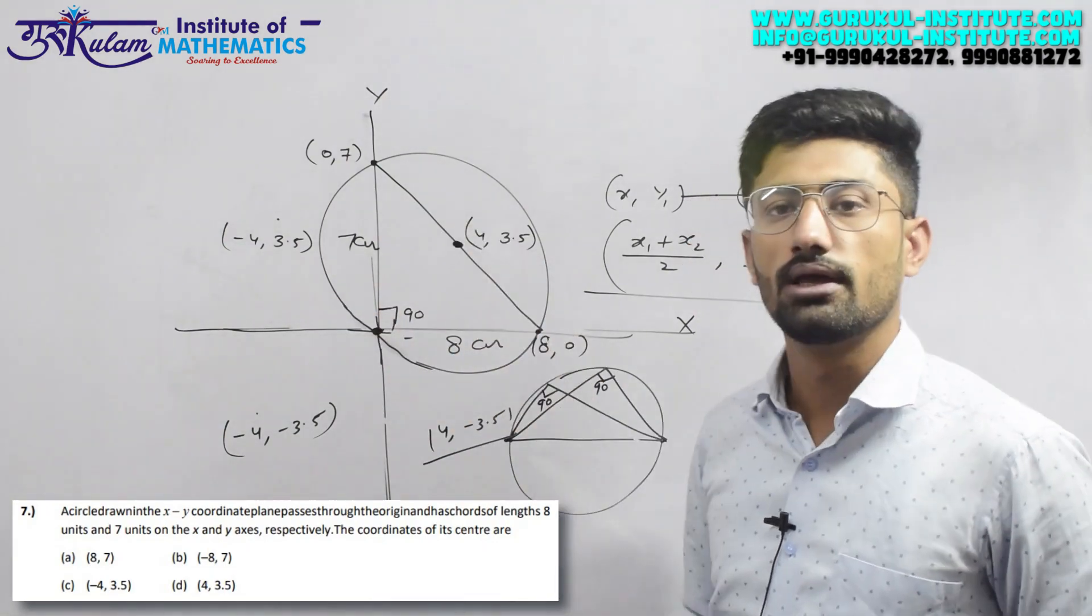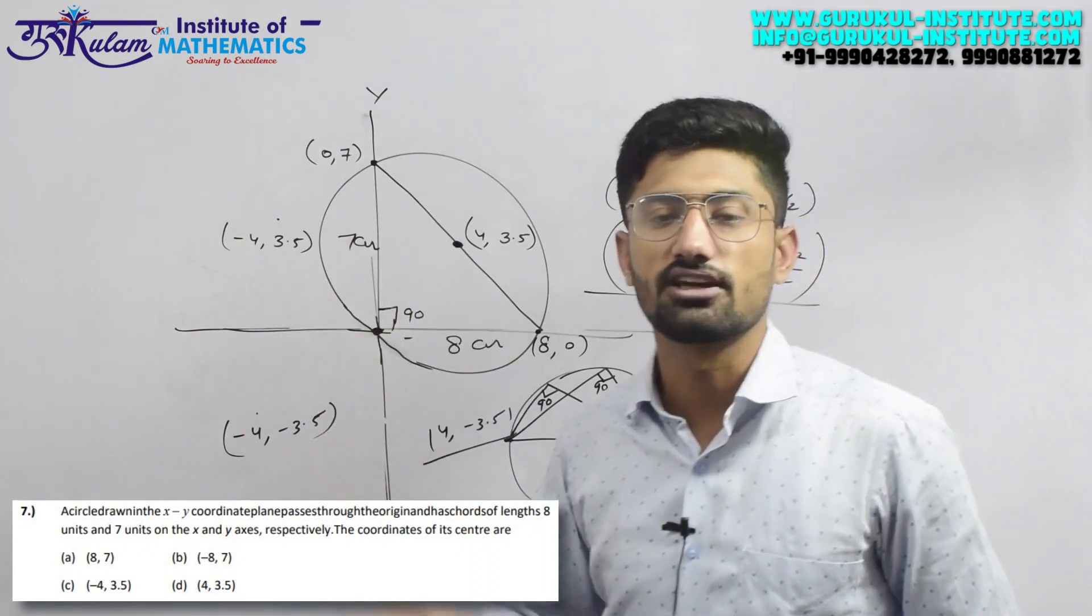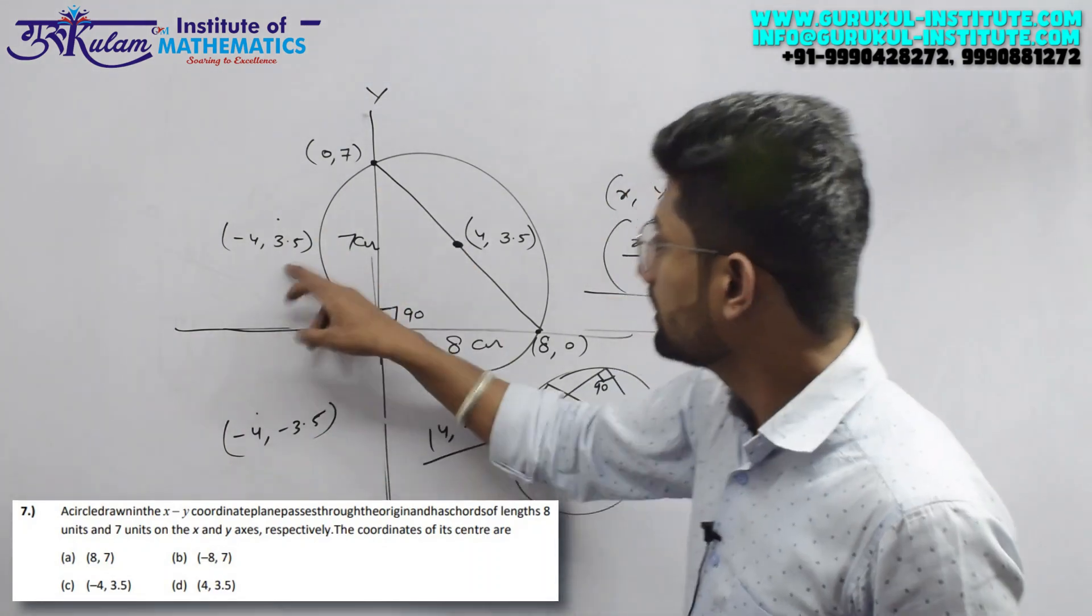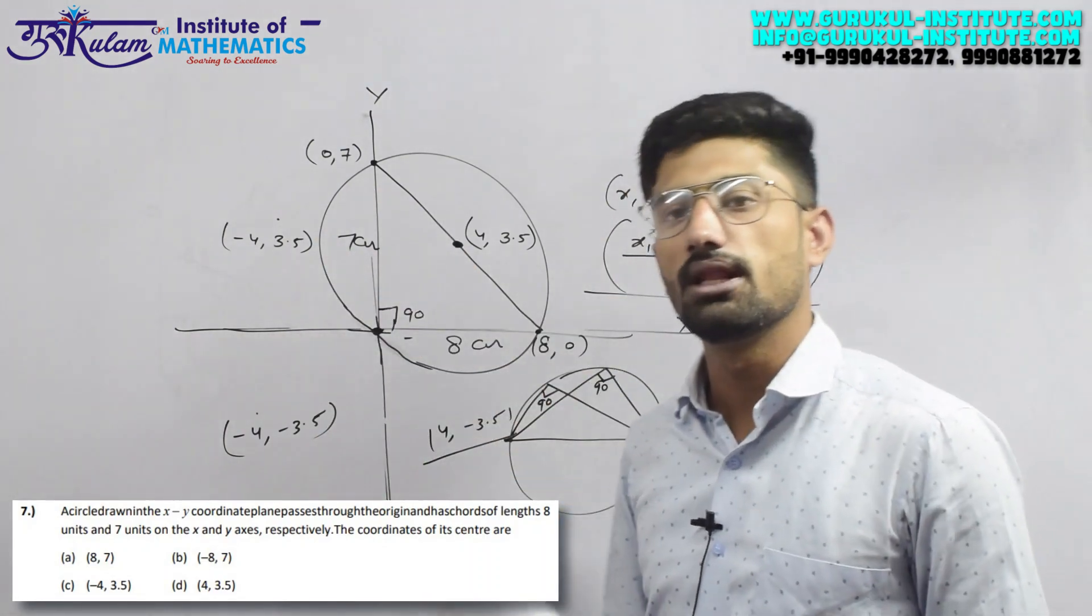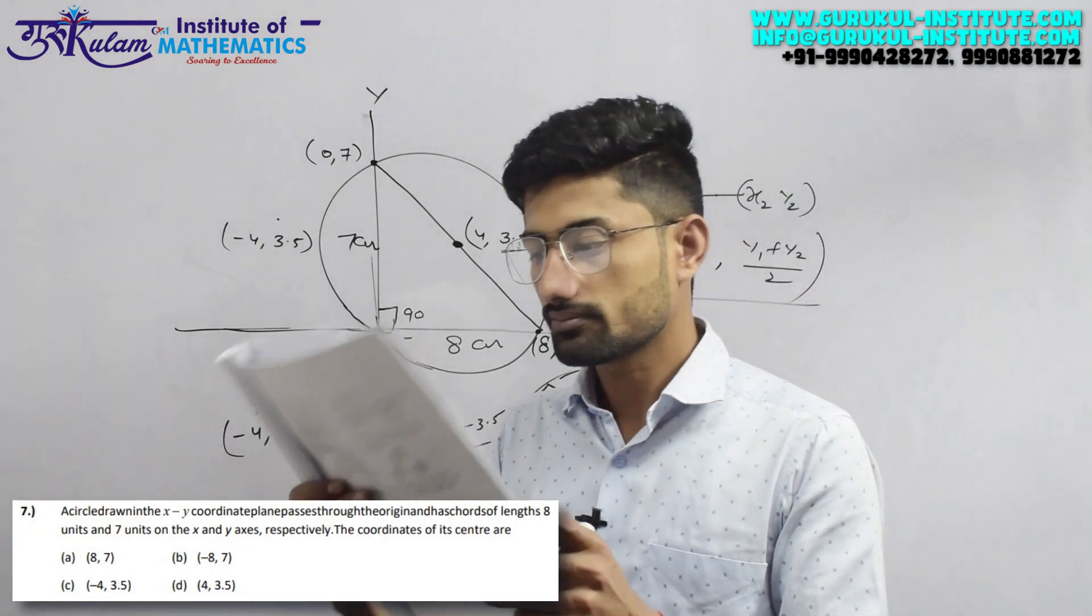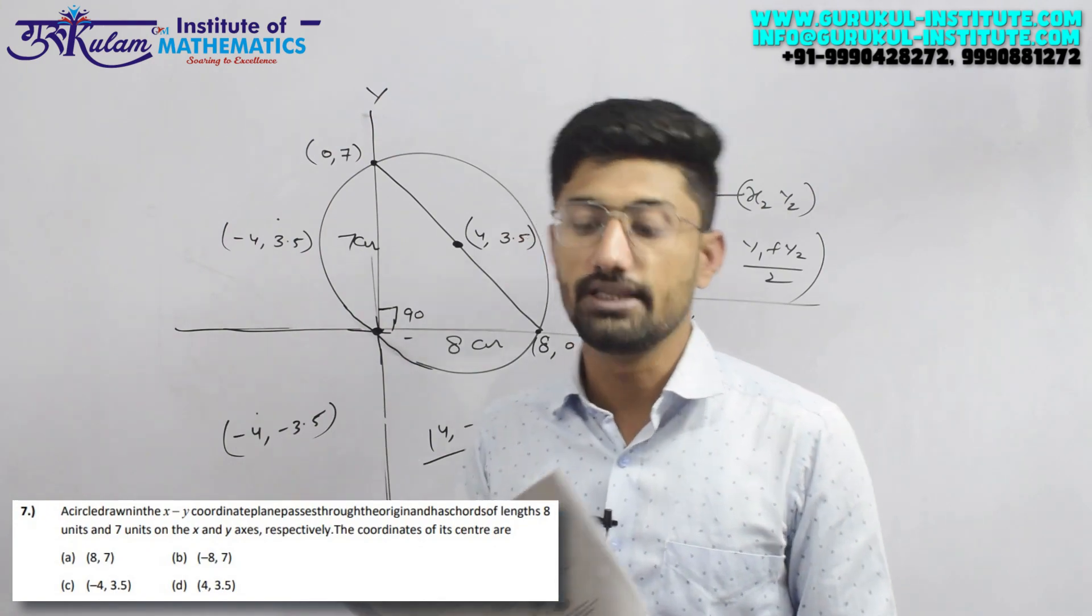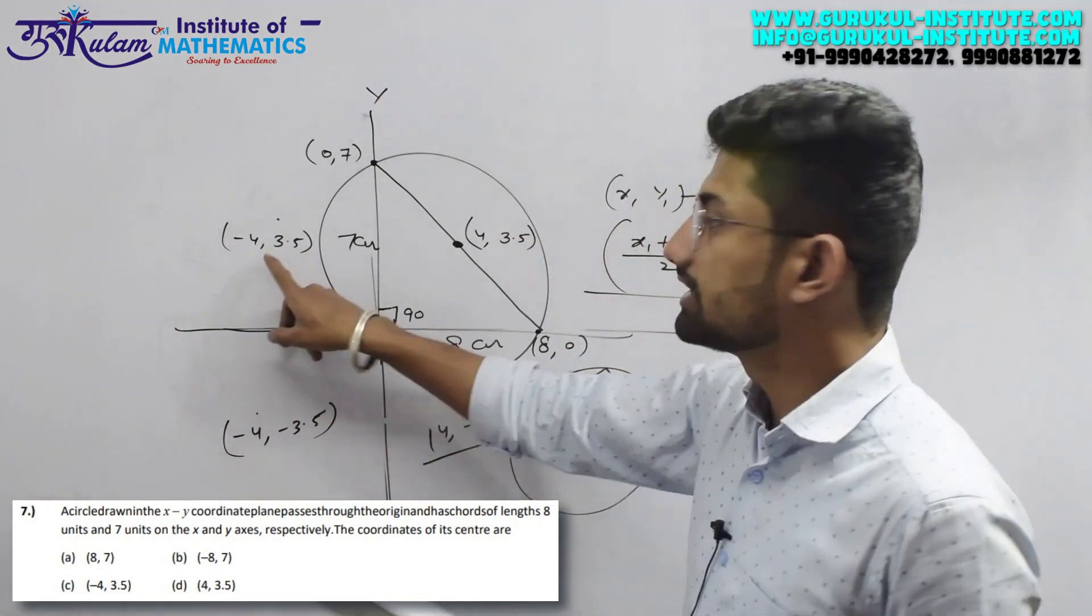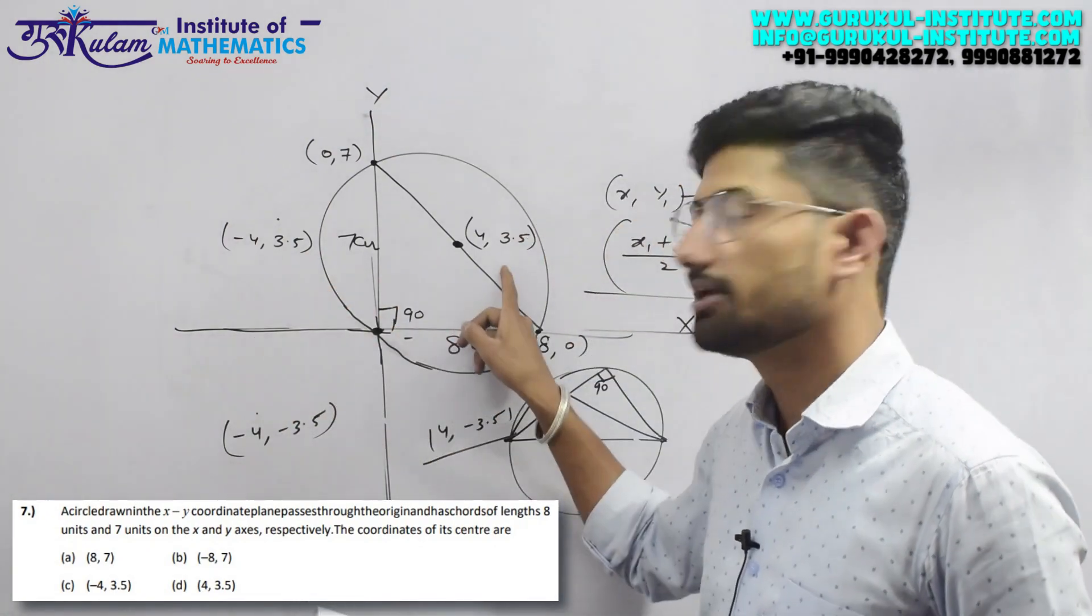So the circle can be in any quadrant. So whichever option from these 4 matches will be the true option. And here if you look at the options, option C has this value and option D has this value.